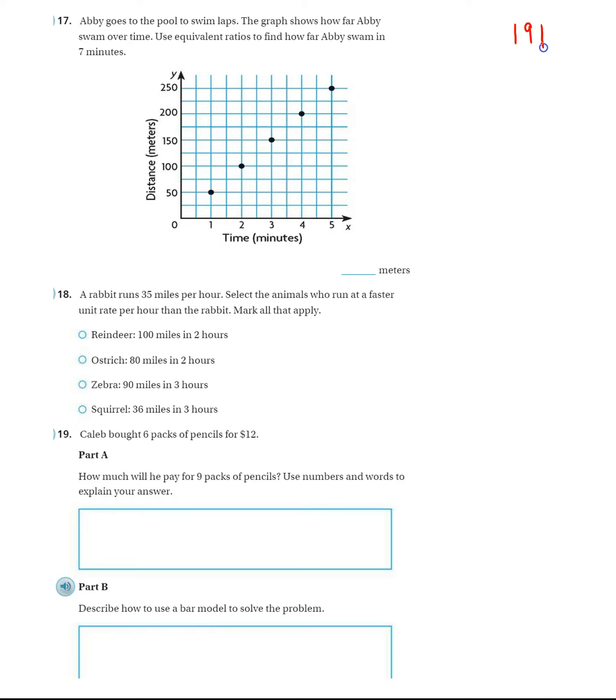All right, now I'm on page 191 in the Big Go Math book. Follow along. Abby goes to the pool to swim laps. The graph shows how far Abby swam over time. Use equivalent ratios to find out how far Abby swam in 7 minutes.